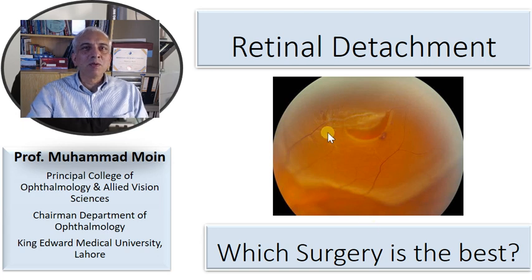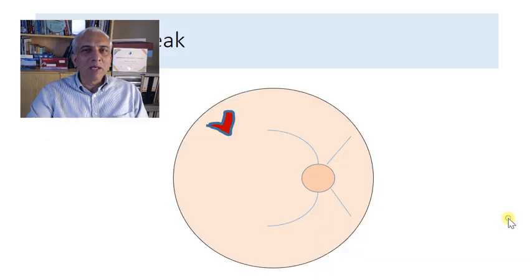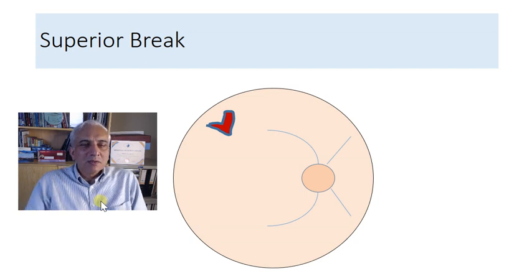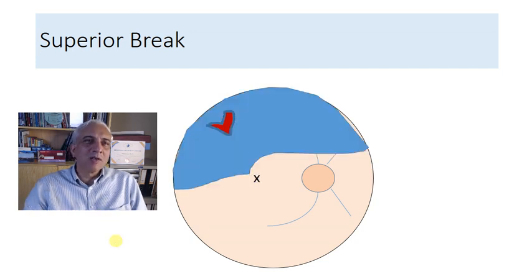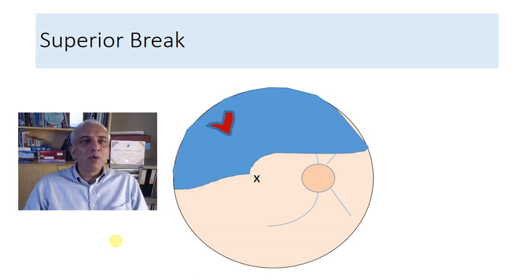This is a typical retinal detachment which you see here. This is a retinal break, and we're going to show you an algorithm based on what is best in these cases. Let's suppose we have a case with a superior retinal break — a horseshoe tear in the superior temporal quadrant — with a macula-sparing retinal detachment. How would you approach this?